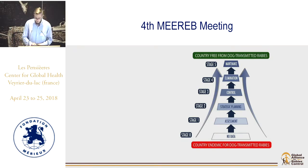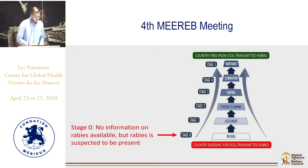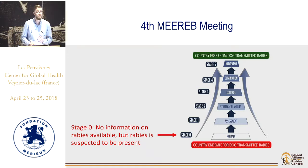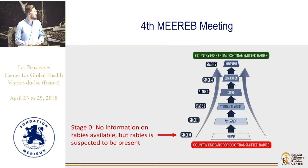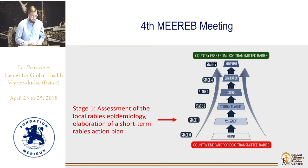You need prevention and control, information education and communication, dog population management, and surveillance — all of these components form the foundation for a good rabies control program. The SAY tool consists of stages from stage zero all the way to stage five. Stage zero is a country with no information on rabies — they know it's there but there's absolutely no information and no work being done on rabies control or understanding the epidemiology.